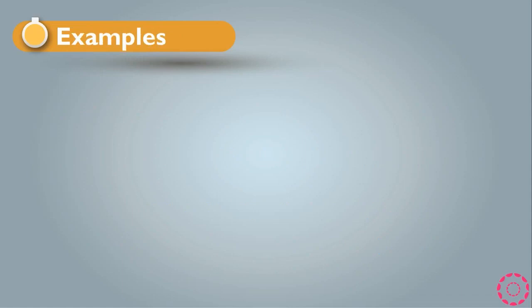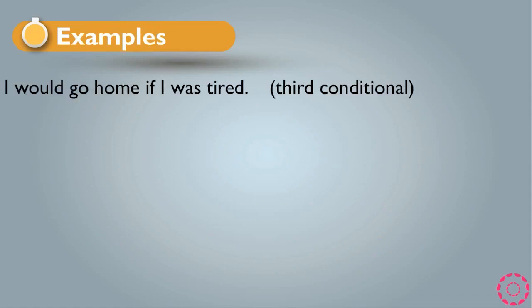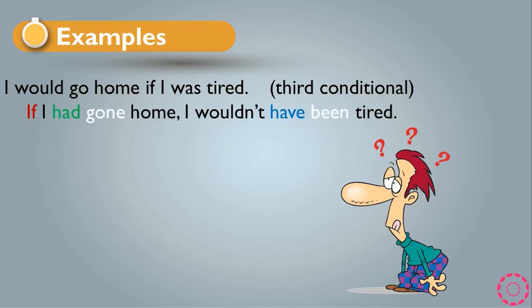Let's see an example. The sentence 'I would go home if I was tired' becomes, in third conditional: 'If I had gone home, I wouldn't have been tired.' As you see, we have if at the beginning, then subject, plus had — with I we use had — and gone, which is the PP, and home, which is the complement. After that, comma, then: I wouldn't have been tired — subject, wouldn't, have, PP, and tired as complement.